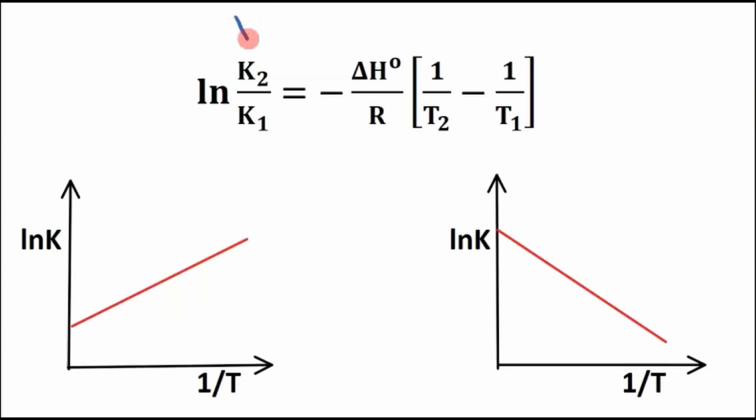the Van't Hoff equation is just like y equals mx plus b, where y is our ln K, m is our slope, and x is like the 1 over T part. And then there is an intercept here, but we can kind of just ignore that for now. This is very similar to y equals mx plus b.